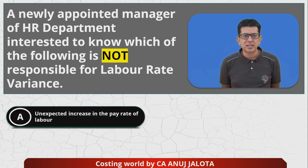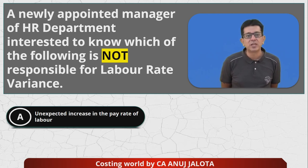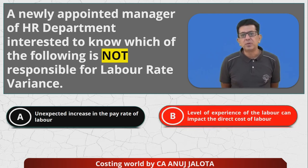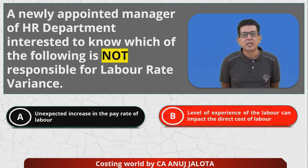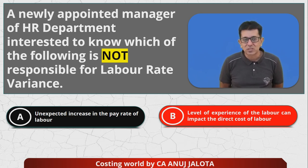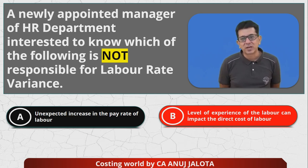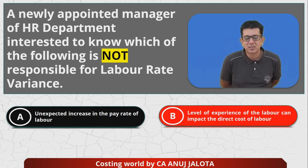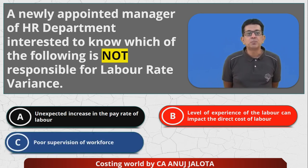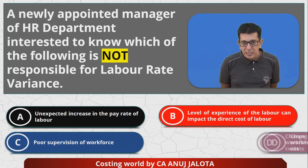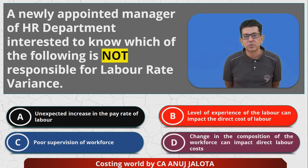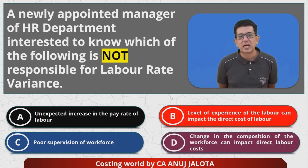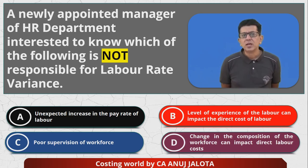The four options are: A — unexpected increase in pay rate of the labor; B — level of experience of the labor can impact direct labor cost; C — poor supervision of the workforce; D — change in composition of the workforce can impact direct labor cost.